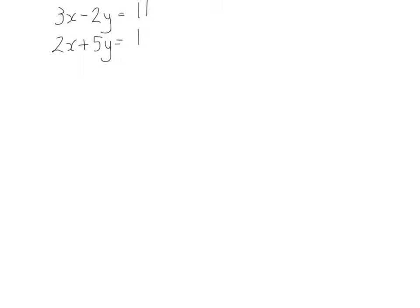Here's one final example for this set of videos. We have 3x take away 2y equals 11, and 2x plus 5y equals 1. This is a past paper question and we're asked to solve algebraically. Calling them equation one and equation two — it's not immediately obvious what to do. We can't just multiply one equation by a simple value to eliminate a variable straight away. We need to find the lowest common multiple of the coefficients to allow elimination.